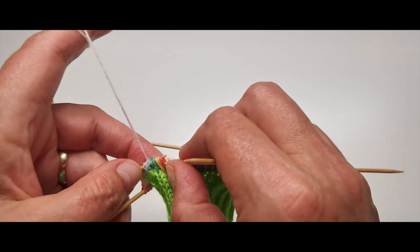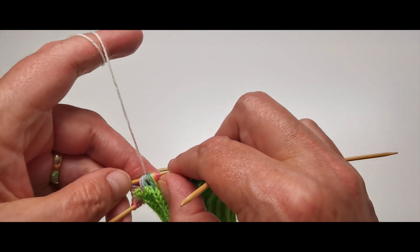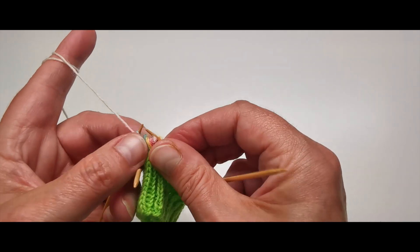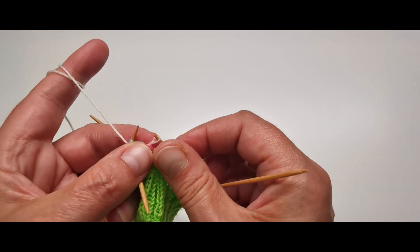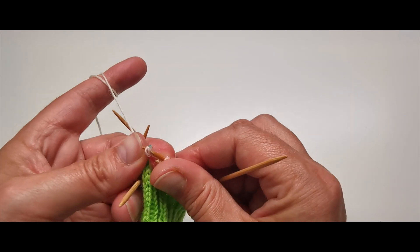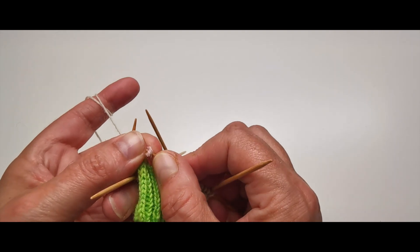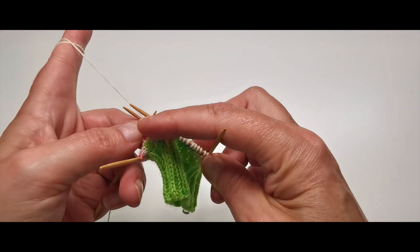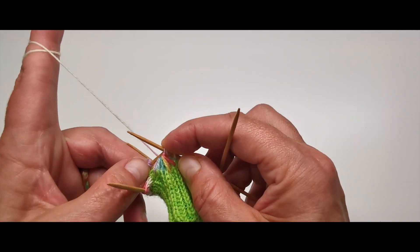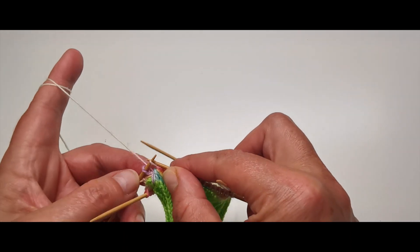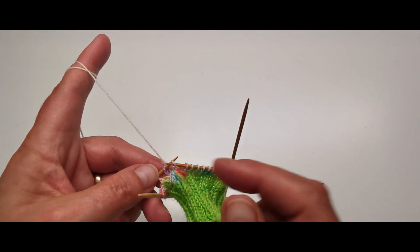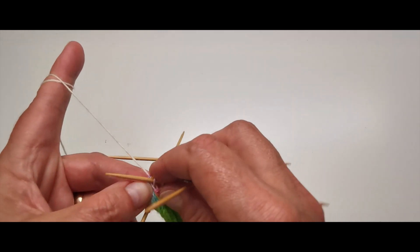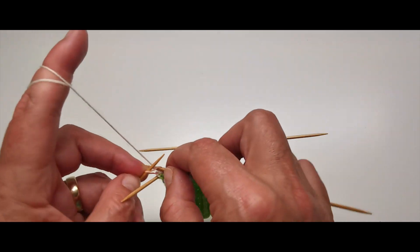Jetzt hast du natürlich eine Masche mehr auf den Nadeln, weil du ja zusätzlich diese tiefer gestochenen Maschen gestrickt hast, und zusätzlich eine Masche zu viel. Ich habe 15 Maschen auf der Nadel, und das solltest du regelmäßig kontrollieren, und damit kein Loch in diese Richtung, Richtung links, entsteht, stricke ich dann die eben zusammengefasste Masche ab mit der nächsten Masche. Ein bisschen fest anziehen, und dann weiter rechts.